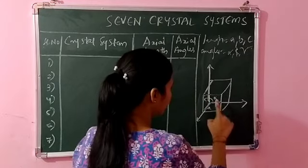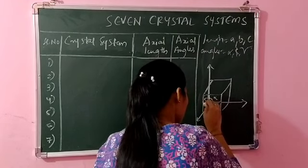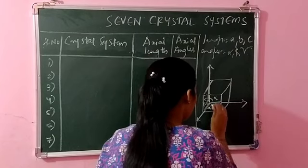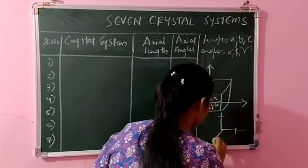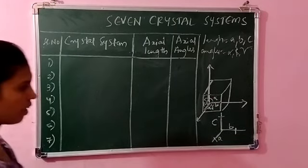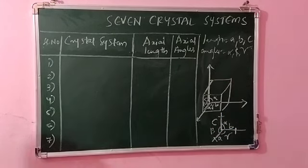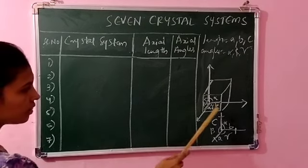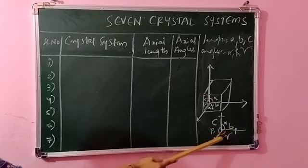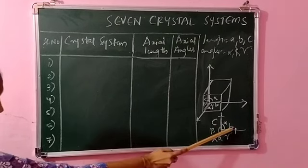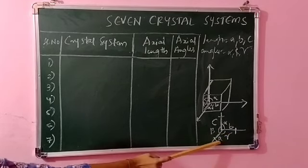Now let us study what are axial angles. The angle opposite to a, or between b and c, is called alpha. The angle opposite to b, or between c and a, is called beta. The angle opposite to c, between a and b, is called gamma. So axial length a, b, c and angles alpha, beta, gamma are now clear.